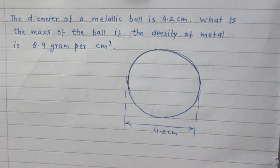The diameter of a metallic ball is 4.2 cm. What is the mass of the ball if the density of metal is 8.9 gram per centimeter cube?